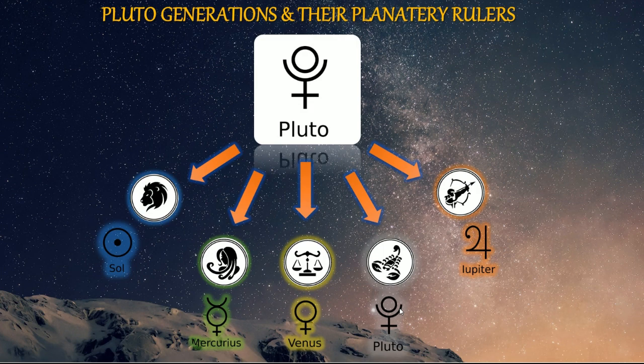For the Pluto in Sagittarius generation, Jupiter is your planet being evolved. Where is Jupiter in your chart? What does that house, sign, and aspect tell you about the specifics of your astrology? For example, a soul with Pluto in Sagittarius in the fourth house is coming into this lifetime learning deep soul lessons around emotional security from within — Jupiter tells you how that's working.